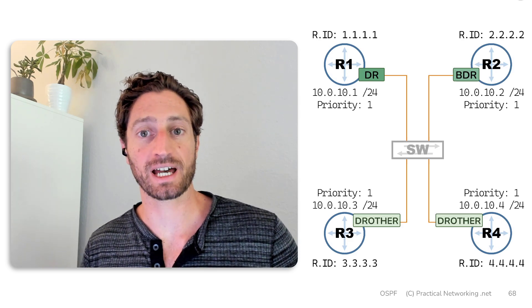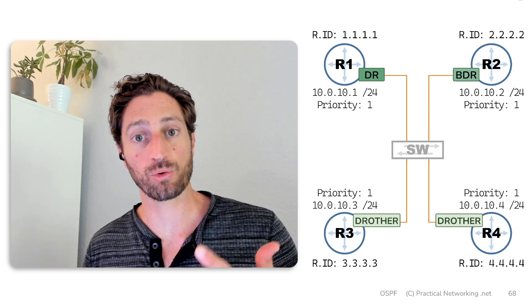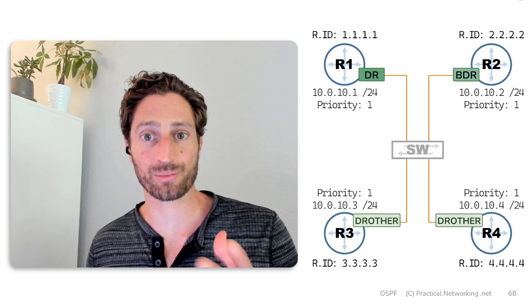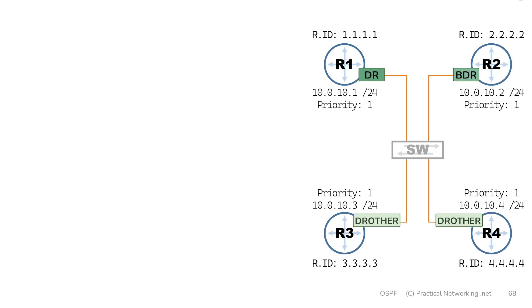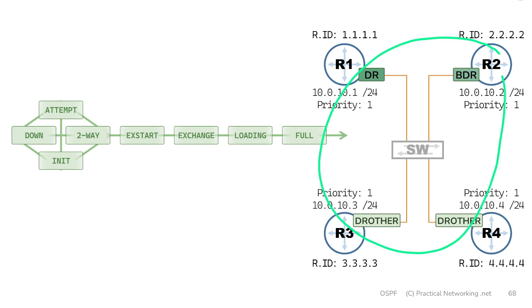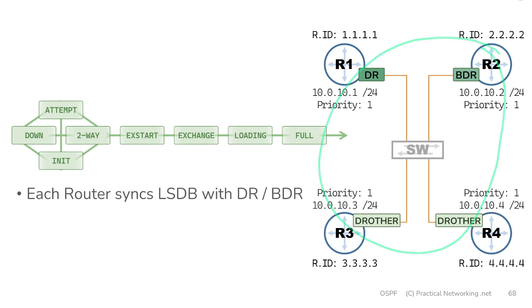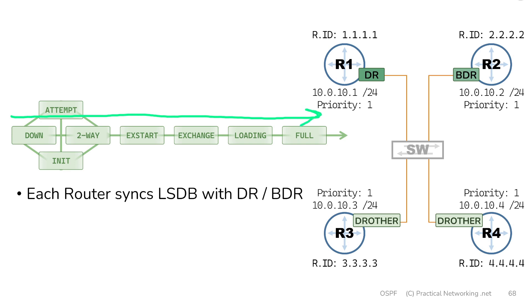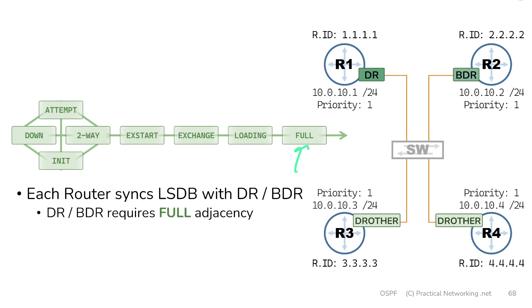Next, we're going to look at how the status of DR, BDR, or DR-other affects the neighbor adjacency process. Back in Lesson 4, we showed you the full neighbor adjacency process and talked through every one of those states. On a multi-access link, every router is going to synchronize their link state database with the DR and the BDR, which means every router on a multi-access link is going to go through the entire neighbor adjacency sequence with the DR and BDR until they get to the full state.